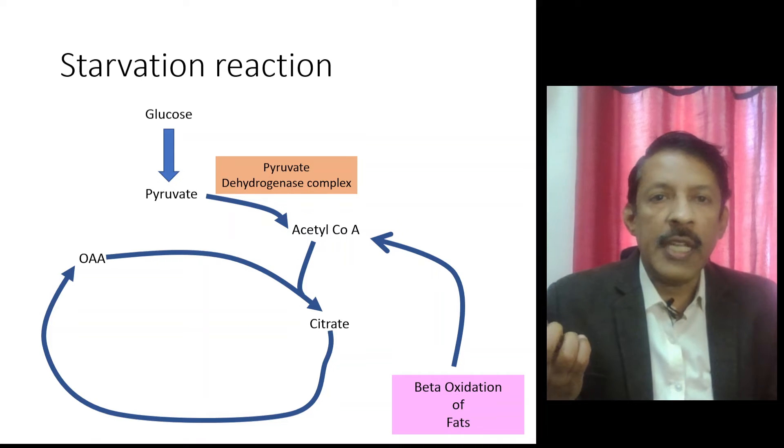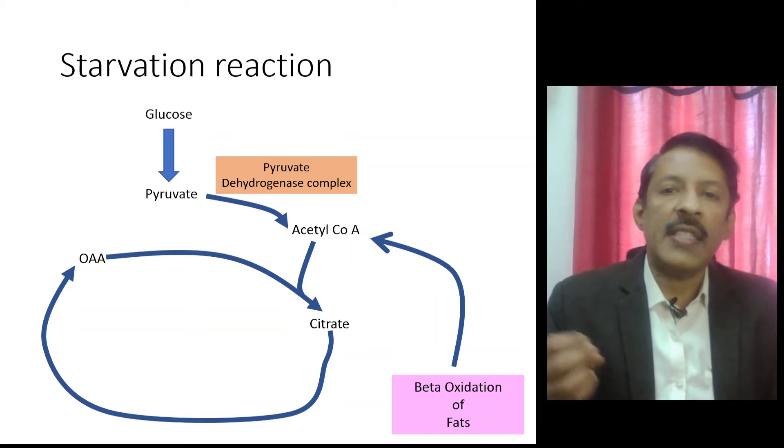When you have starvation, there is no glucose entering the cell, there is no pyruvate being produced, so there is no source of acetyl coenzyme A.